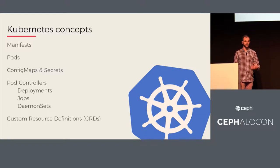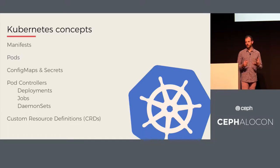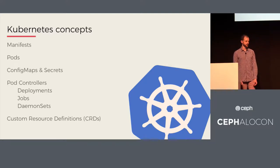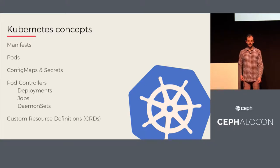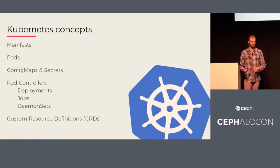Secrets are good for things you don't want exposed to the outside world, like your authentication keys. Kubernetes has many pod controllers, but the three we're mostly concerned with are deployments, which control deployment of a particular pod with one or more instances; jobs, which are run to completion and not restarted once finished; and daemon sets, which run a pod across a subset of Kubernetes nodes and may scale up or down depending on available nodes. Custom resource definitions allow us to define a custom manifest for any arbitrary resource.